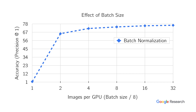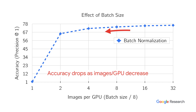In this visualization, we quantify the effect of batch size on the performance of batch normalization. We plot the ImageNet accuracy of a ResNet V2 model as a function of the number of images used to compute the normalization statistics. The performance degrades significantly as the batch size is reduced.